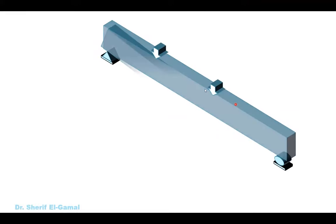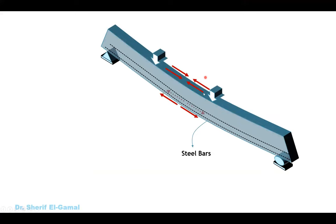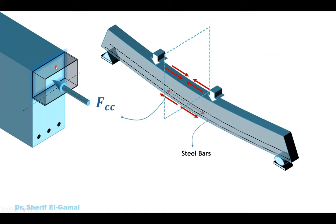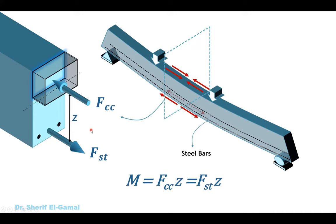If we have a beam under concentrated loads like this, this will result in a compression force at the top face of the beam and tension force in the bottom face of the beam, where we usually have tensile steel reinforcement. If we take a section at the middle of the beam, we will see that we have compression forces at the top called FCC, and a tension force at the level of the tension steel called FST. The distance between the two forces is called Z, or the lever arm. From equilibrium, FCC equals FST, and the capacity of that section is FCC times Z or FST times Z.